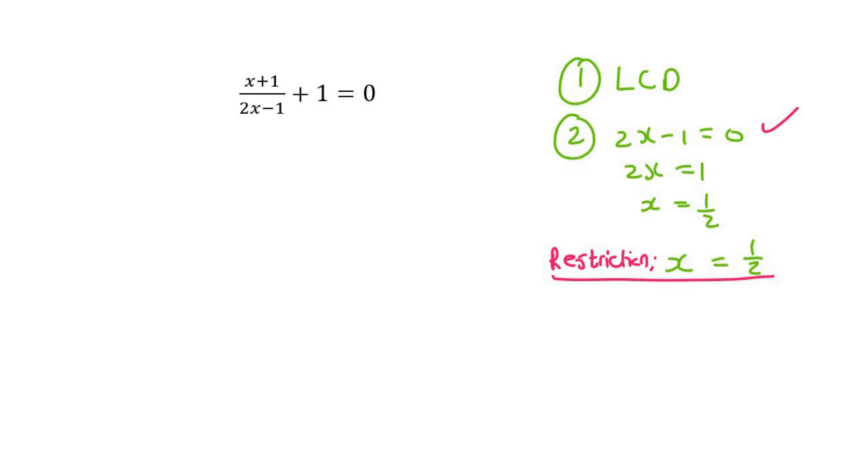So now we've done number two, so now we can go get our common denominator. If this is 1 over 1, then the lowest common denominator is going to be 2x minus 1. So that means we are going to multiply here by 2x minus 1, and what you do to the bottom, you always do to the top.